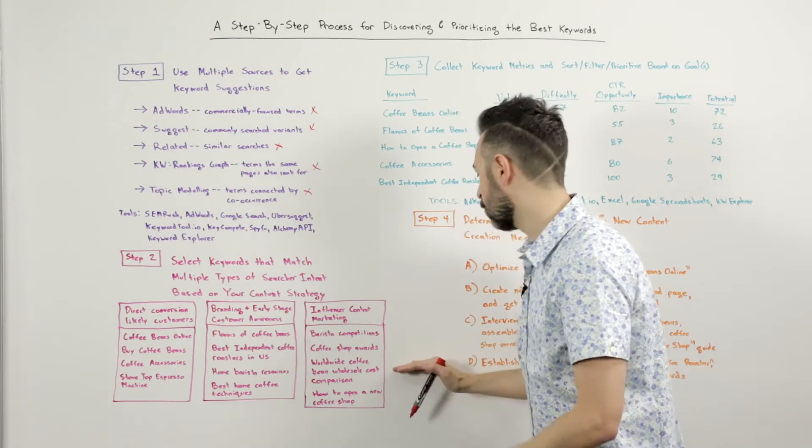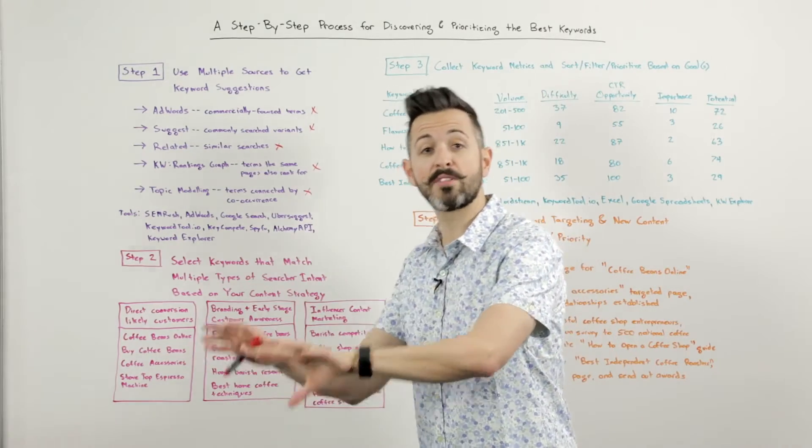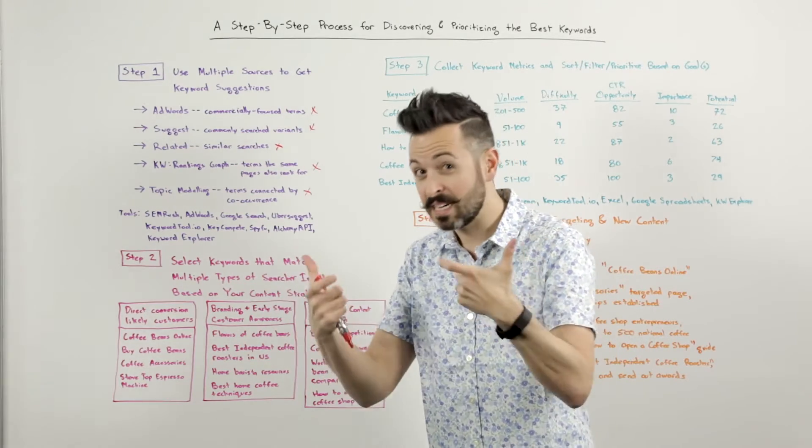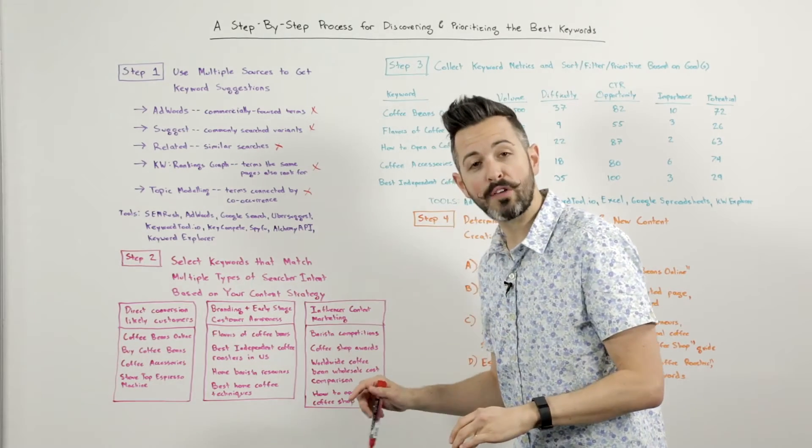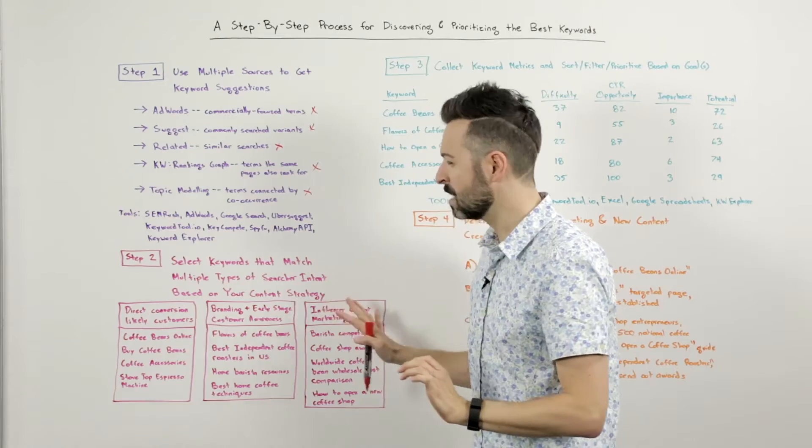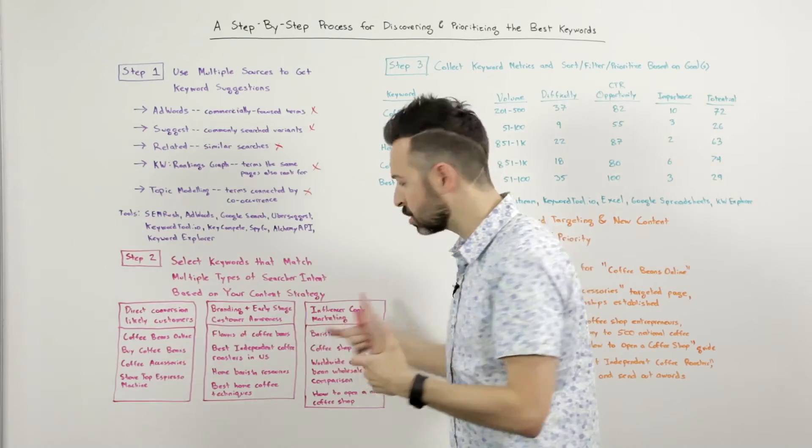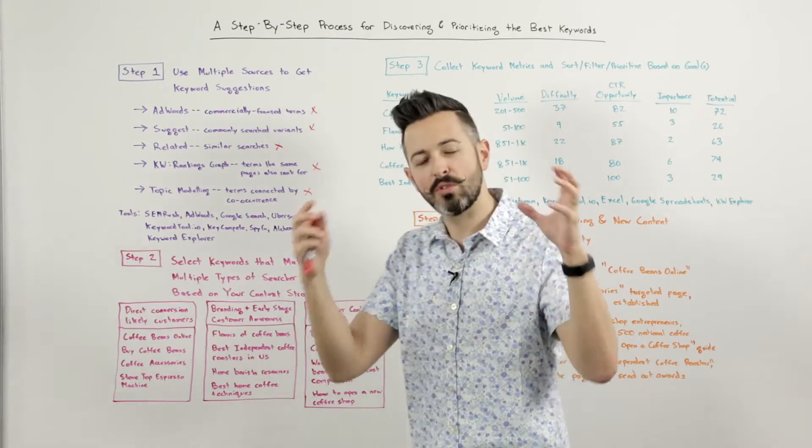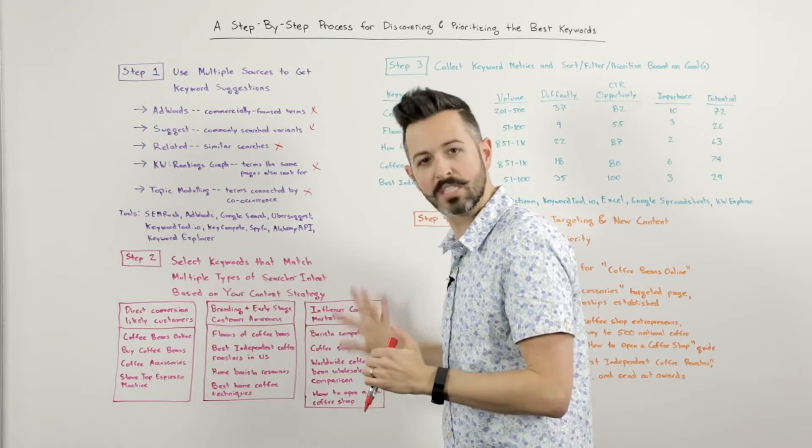Coffee shop awards, same thing. Worldwide coffee bean wholesale cost comparison. This is going to the suppliers and the coffee bean buyers around the world and looking at price trends and tracking. That's kind of some of that data that a lot of those folks might have. Probably a small audience, but very influential people. How to open a new coffee shop. Now I'm targeting coffee entrepreneurs who are also potential influencers for me. So you're going to take, these lists won't apply to all of your efforts. Your efforts are going to be determined by your specific strategic goals. But you should make keyword lists and match those up to all the keywords you see here. And I would encourage you, if you're doing this, to make a different list for each one of those.